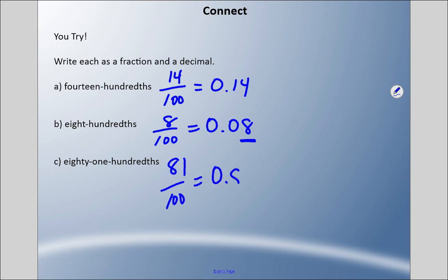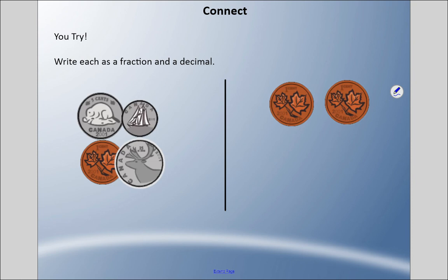Lastly, 81 hundredths as a fraction and 0.81 as a decimal. Last one here, I have some money and I'd like you to change this into dollars. Pause it, come back when you're ready. For the first one on the left, I have 25 cents plus 10 cents is 35 cents, plus 5 cents is 40, plus 1. I have 41 cents out of a possible 100 to make a dollar.